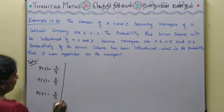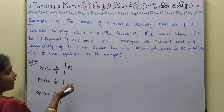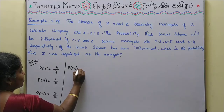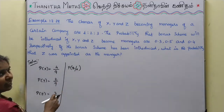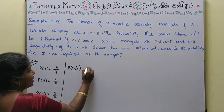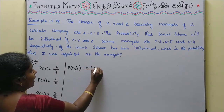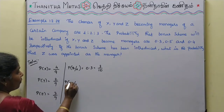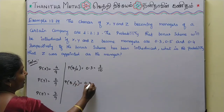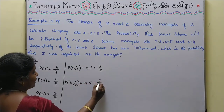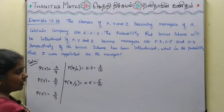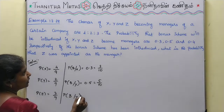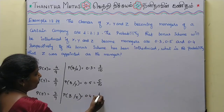Now we have the bonus scheme. X manager has a bonus scheme probability — P of B given X is 0.3, that is the fraction 3 by 10. Y manager has a bonus scheme probability of 0.5, that is 5 by 10. Z manager has a bonus scheme probability of 0.4, that is the fraction 4 by 10.